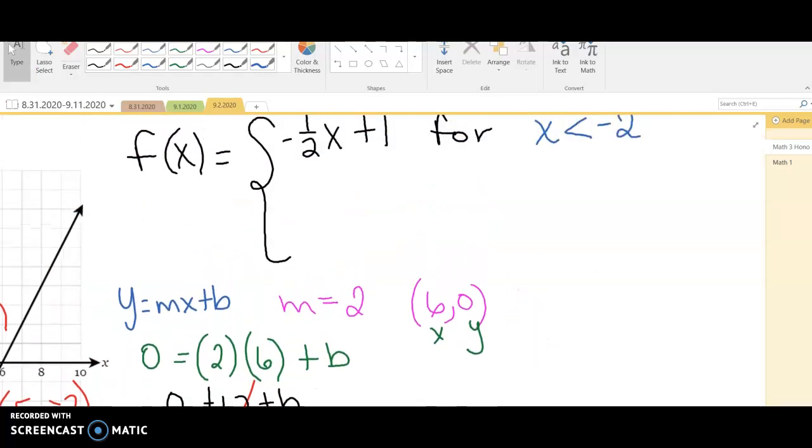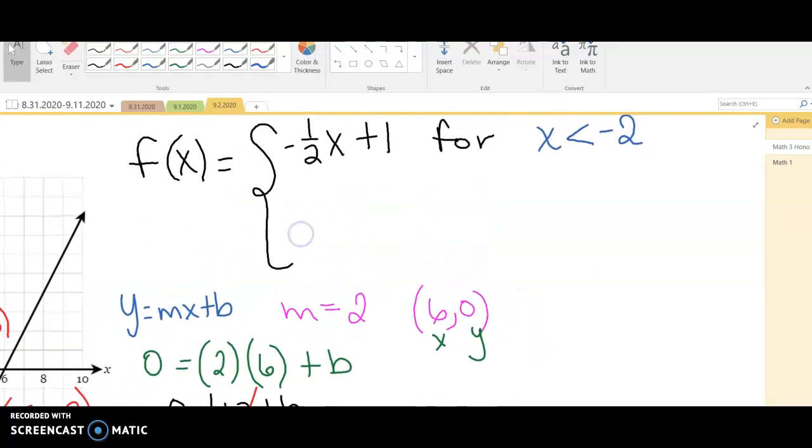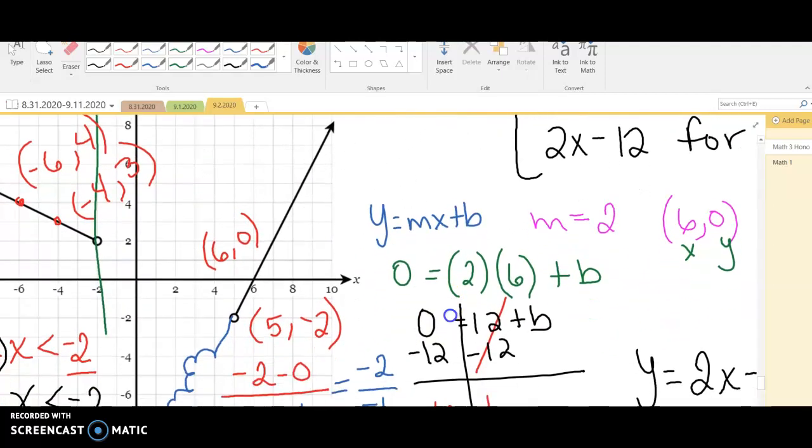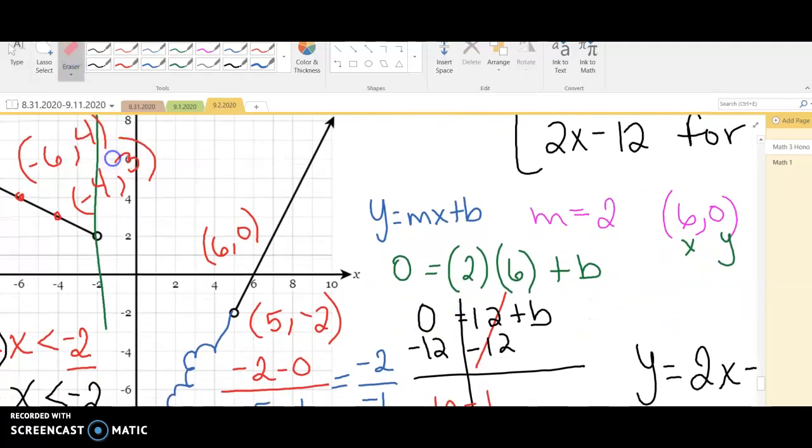So I'm going to plug that up here. I'm going to say 2x minus 12. And now we've got to find the domain one more time. So the domain. Let's look back at my line. My domain starts from the left, and where does it end on the right?